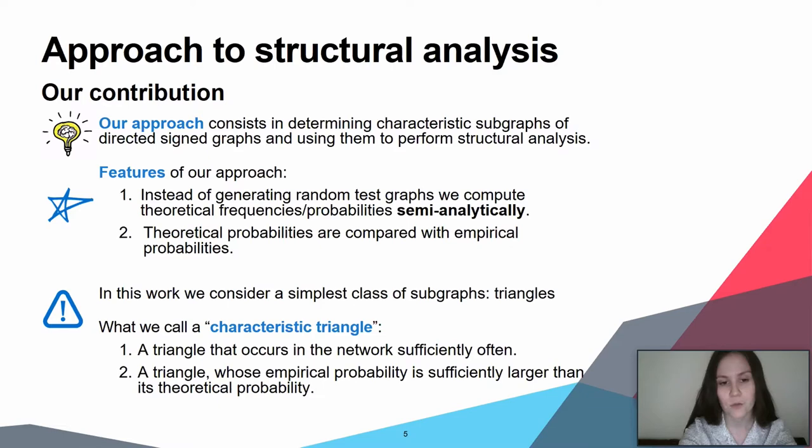We will consider a specific triangle as characteristic if it possesses two properties. First, the triangle occurs in the network sufficiently often to not be considered as a mere fluctuation. And second, the empirical probability of the triangle is sufficiently larger than its theoretical probability.